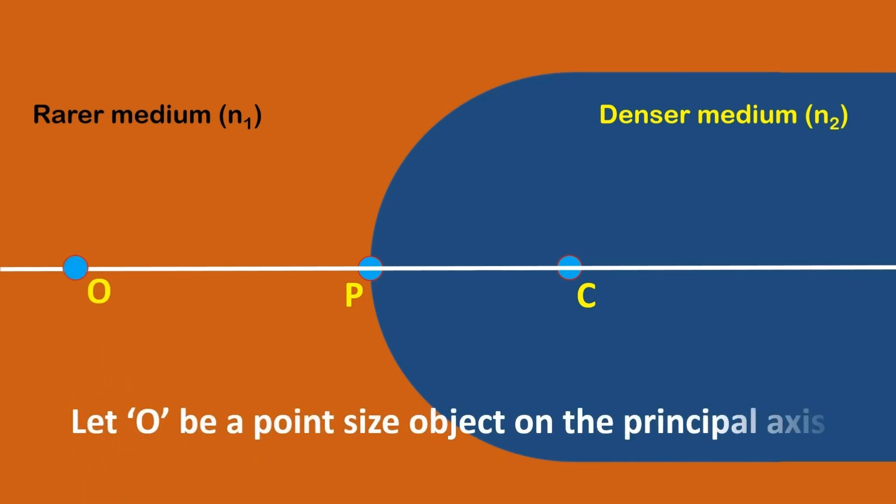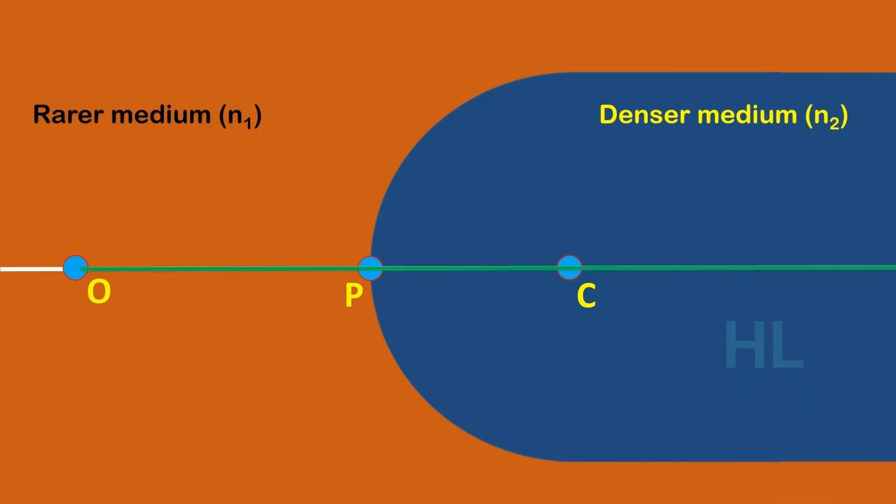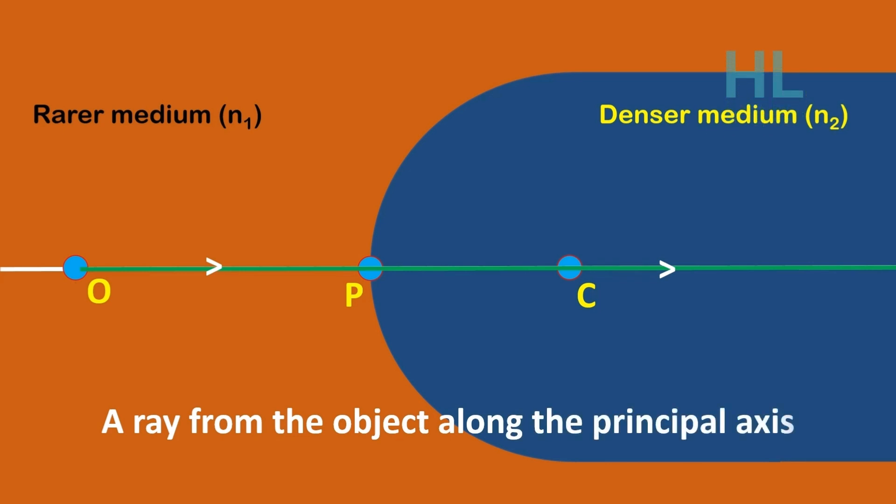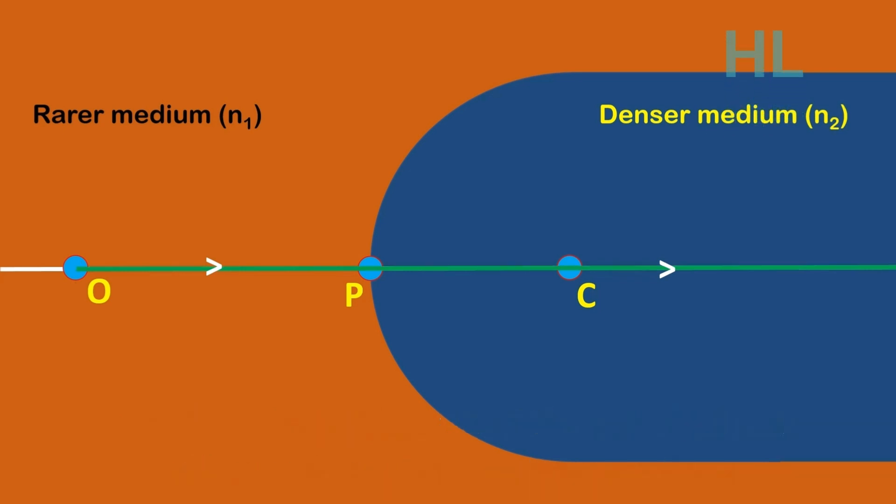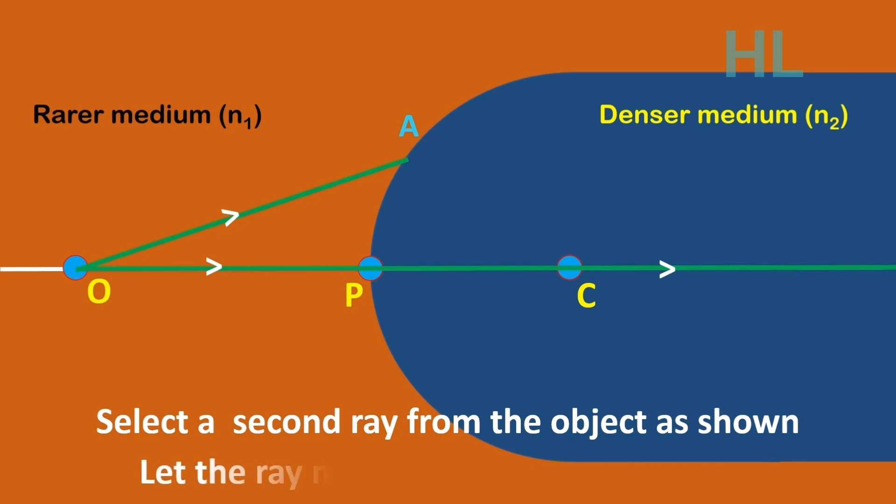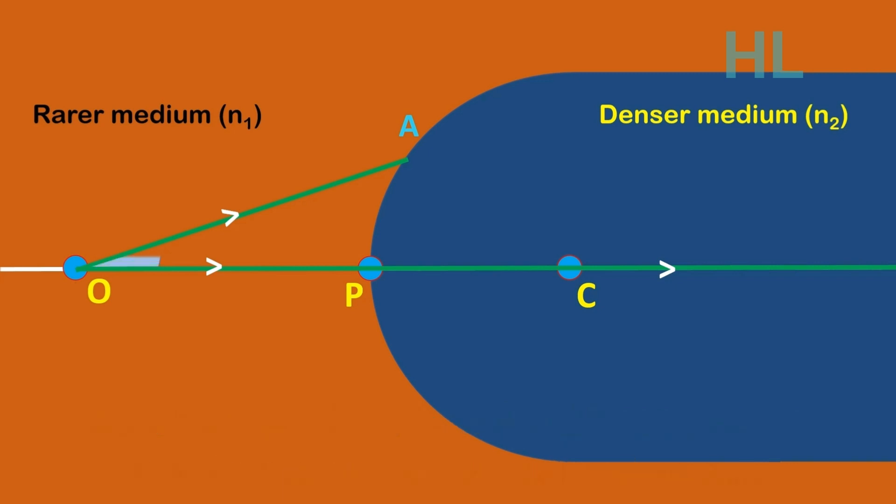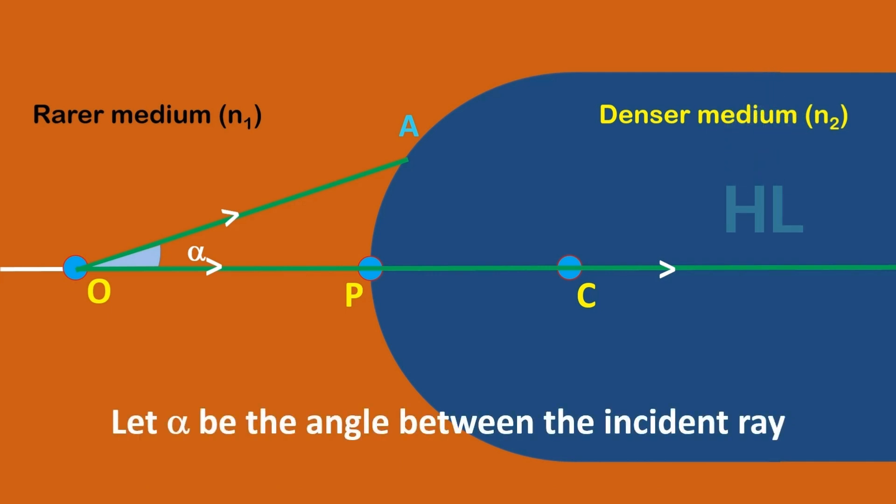Let O be a point size object on the principal axis. Observe the ray from O towards P. A ray from the object along the principal axis will pass through P and is undeviated. Select a second ray from the object as shown. Let the ray meet the curved surface at A. Let alpha be the angle between the incident ray and the principal axis.